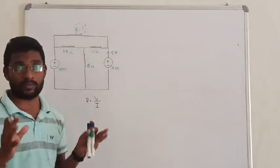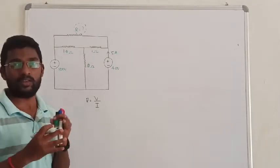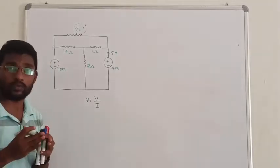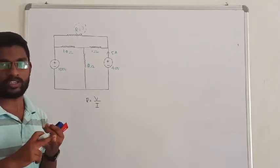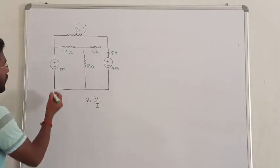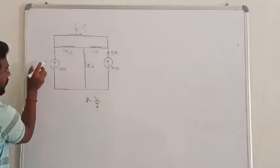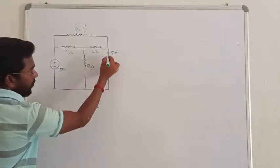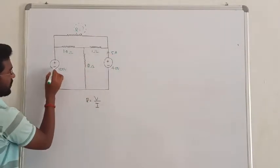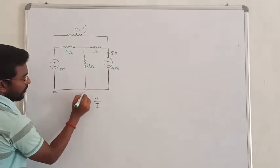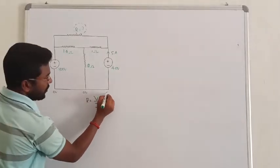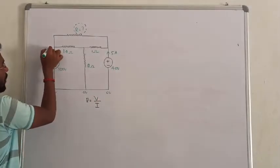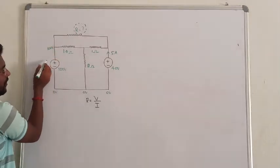Basically, I have given some directions. The current flow direction — current always flows from higher potential point to lower potential point. If we observe the branch, the branch has positive terminal connected here and negative terminal connected to the ground point. The negative terminal is at ground, which is 0 voltage. If you observe the positive terminal, here we have 100 voltage.